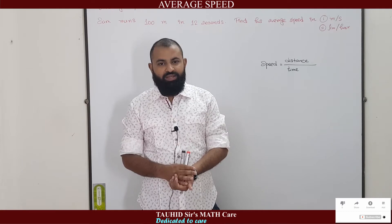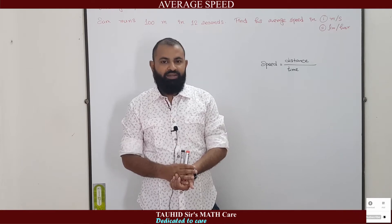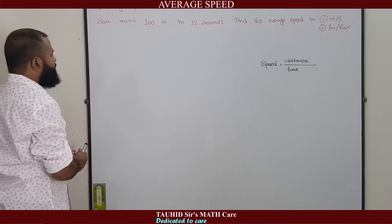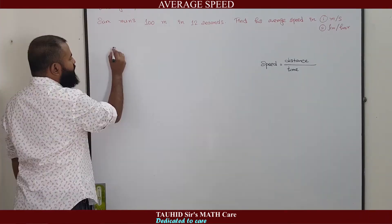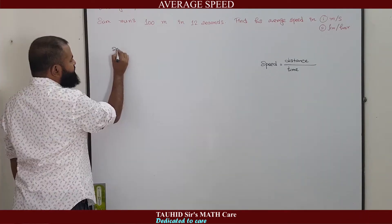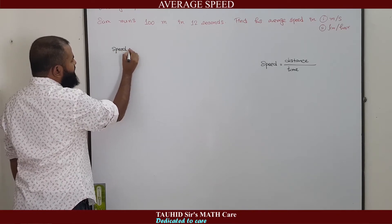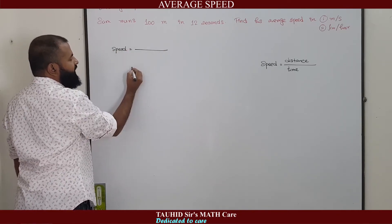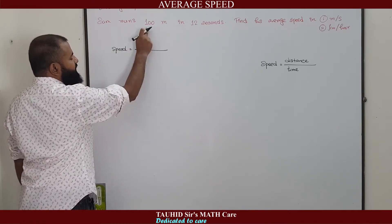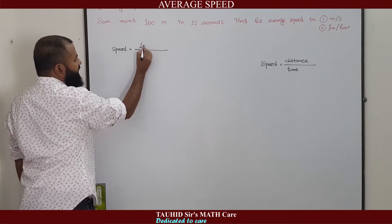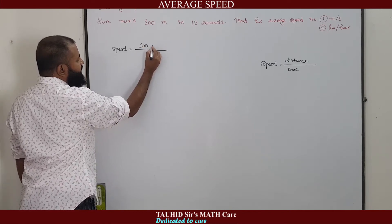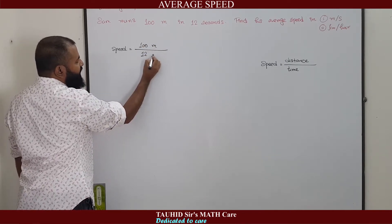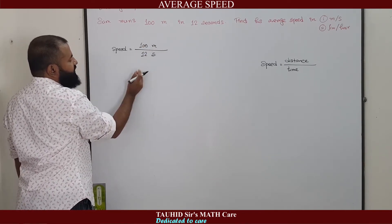You are asked to find his speed in meter per second and kilometer per hour. We know that speed equals distance divided by time. The distance is 100 meters and the time is 12 seconds.